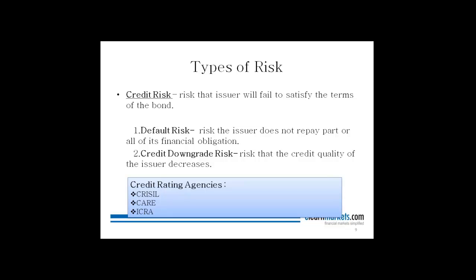But if a company like Tata comes out with its bond security, you'll find that the credibility of that company is much higher. Credit risk can be broken down into two types: default risk and credit downgrade risk. Default risk is a more severe kind where there is a clear indication you won't get back your money — the issuer may default on coupon payments payable periodically or the redemption amount payable at the end of the tenure.